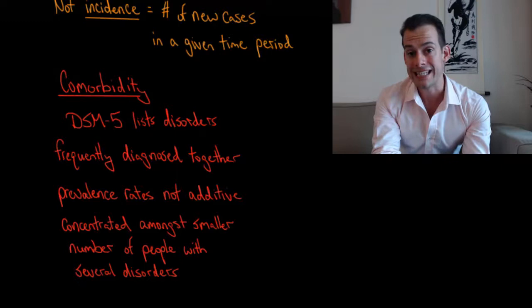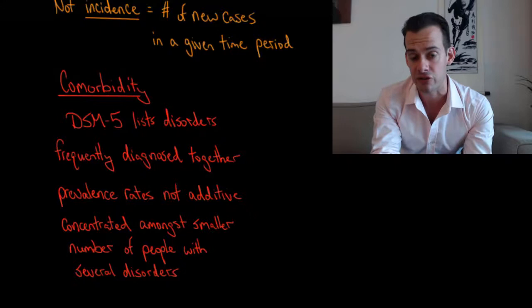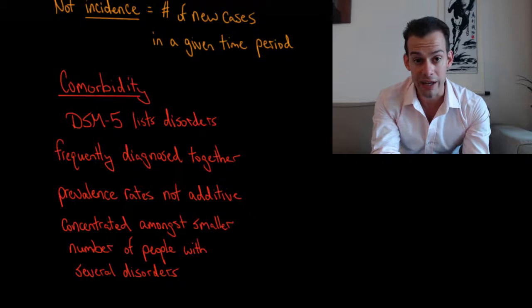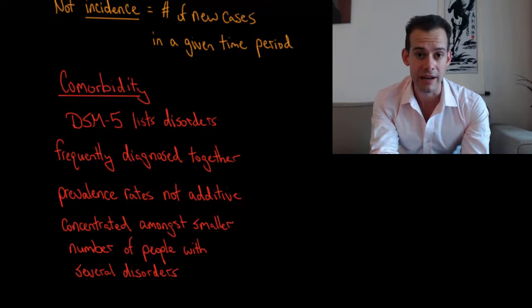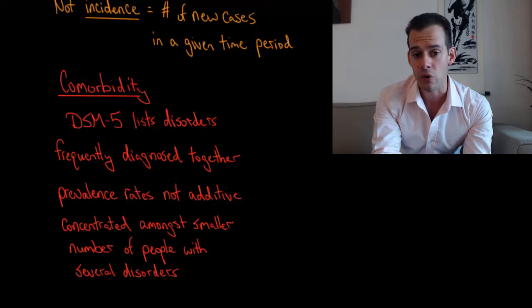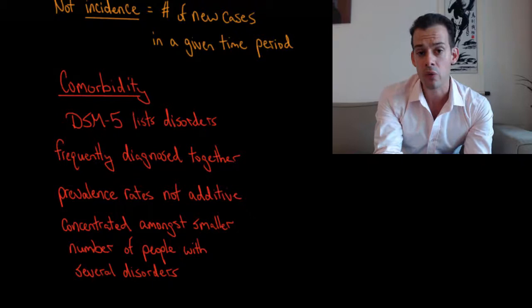And the reason is comorbidity. Because what we see is that mental illnesses tend to be concentrated amongst a smaller number of people who each have several disorders. So when we talk about the fact that eating disorders are frequently comorbid with depression or that anxiety and depression are comorbid or PTSD and depression are comorbid, then what we're seeing is that same patient is being counted in the prevalence rate for multiple disorders. So a person who has anorexia nervosa and depression is going to be counted in the prevalence rates of both of those disorders even though it's only one patient.